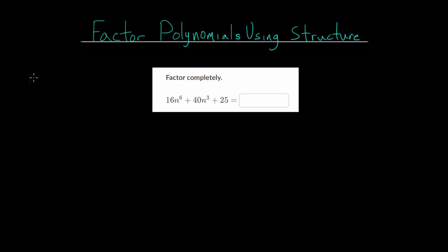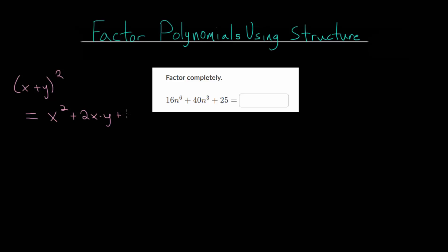A perfect square is when we have something like x plus y, where x and y can be any type of number or variable expression, and we square that. When you square a binomial, you rewrite it twice and then multiply it out using distribution. When you do that, you get x squared plus twice x times y plus y squared.